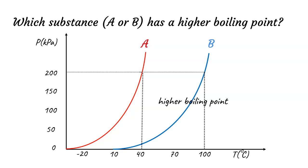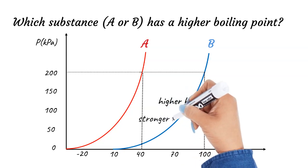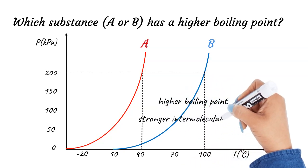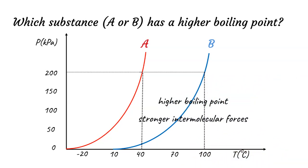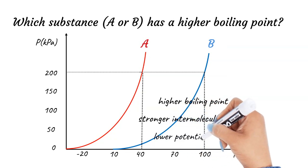The stronger the intermolecular forces between the particles in the liquid phase, the higher the energy required to weaken these attractive interactions to get the substance into the gas phase. In other words, higher boiling temperatures indicate stronger intermolecular forces. Therefore, the intermolecular forces are stronger in substance B compared to substance A. Also, the stronger the intermolecular forces, the lower the potential energy. Therefore, substance B has a lower potential energy than substance A.